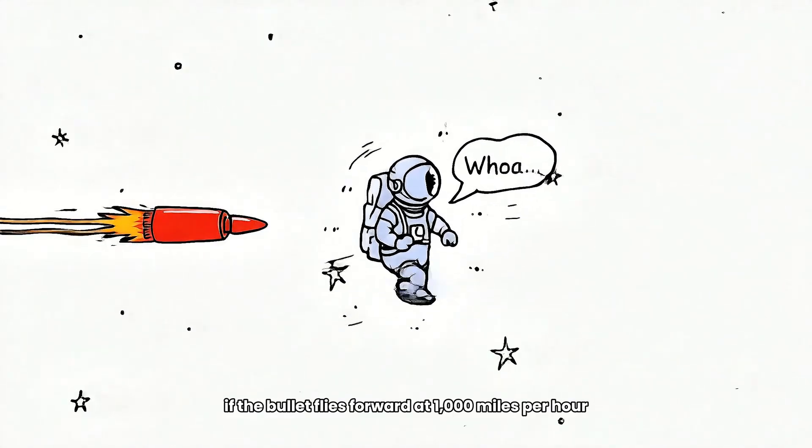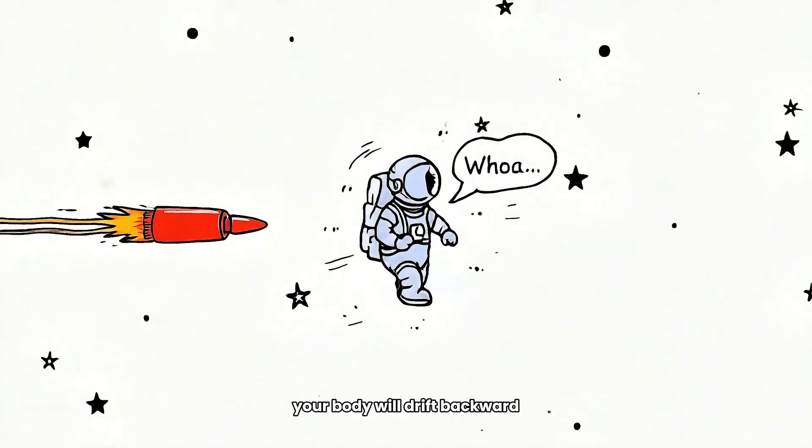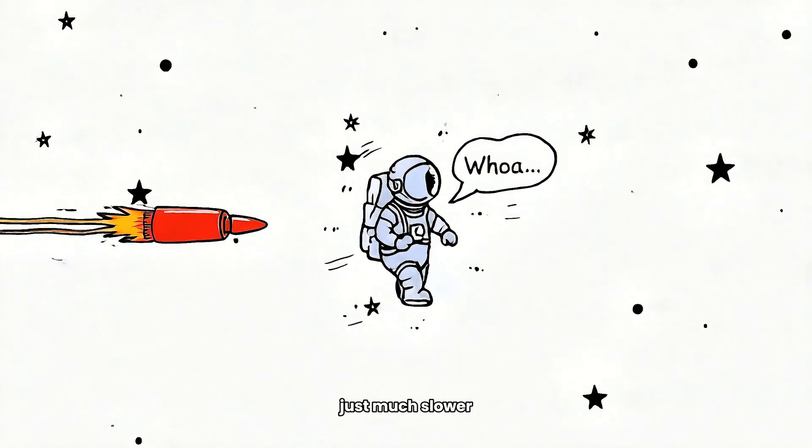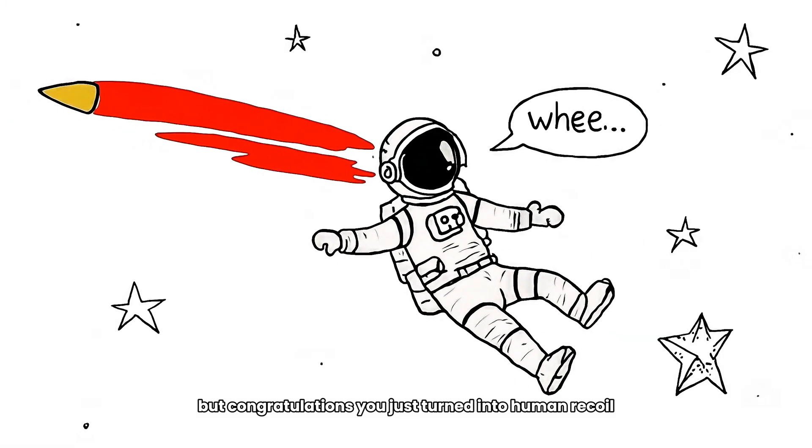If the bullet flies forward at 1,000 miles per hour, your body will drift backward, just much slower, because your body mass is greater than the bullets. It might be just a gentle float. But congratulations, you just turned into human recoil.